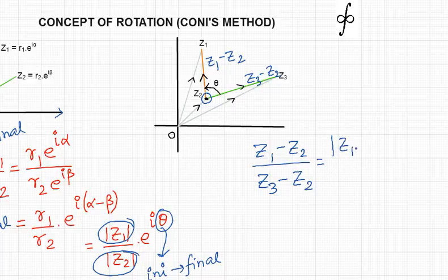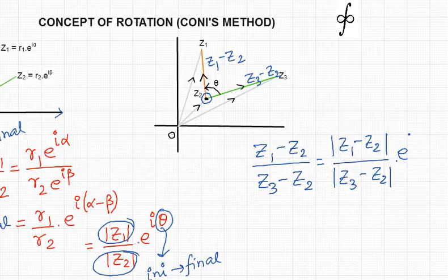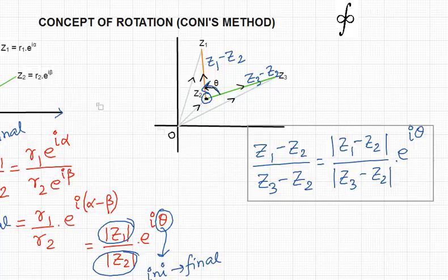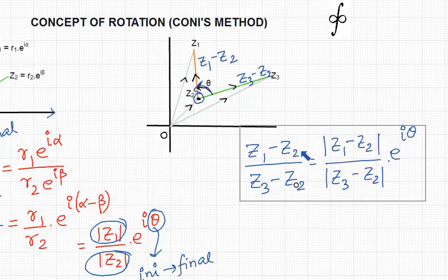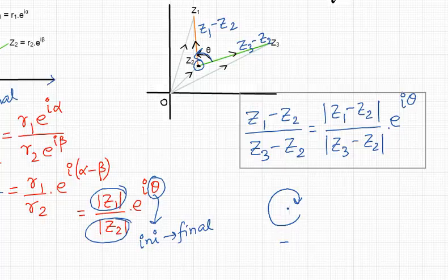This equals |z1−z2|/|z3−z2| · e^(iθ), where theta is the angle traveled from initial to final. This is the generalized representation of the conic method of rotation: final divided by initial equals mod(final)/mod(initial) · e^(iθ). Regarding sign convention: when the angle is measured in the clockwise direction it is taken as negative, and when measured in the anti-clockwise direction it is taken as positive.